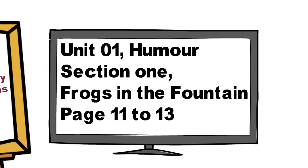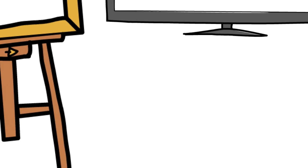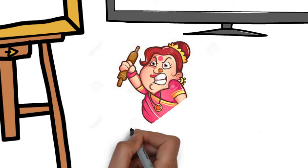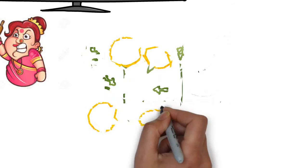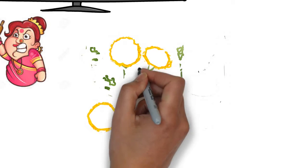In this story, the author provides a delightful description of a simple incident involving his aunt. Students, I hope you have read this unit. Let's take a look at its summary. In the first two paragraphs, the author says that